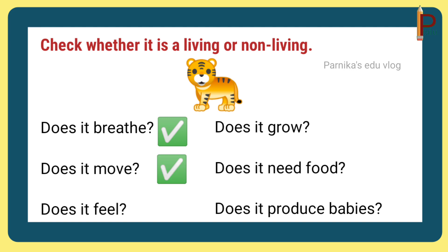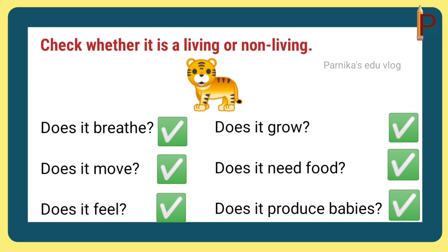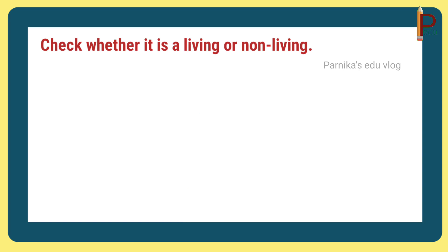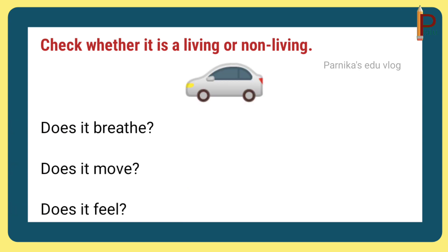Does the tiger move? Yes. Does it feel? Yes. Does it grow? Yes. Does it need food? Yes. Does it produce babies? Yes. So tiger is a living thing. Next, car: does it breathe? No. Does it move on its own? No.